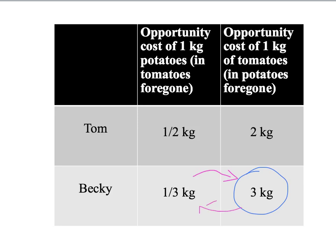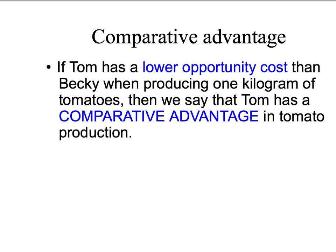Notice that while Becky had an absolute advantage in everything, Tom actually has the lower opportunity cost of producing a kilogram of tomatoes — he gives up less potatoes. While Becky has the lower opportunity cost of a kilogram of potatoes — she gives up less tomatoes than Tom. We call lower opportunity cost comparative advantage. So Tom has a comparative advantage in tomato production, and Becky has a comparative advantage in potato production.